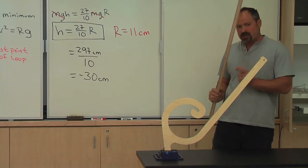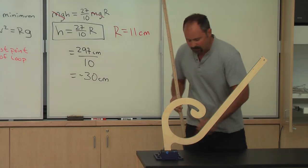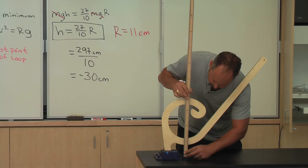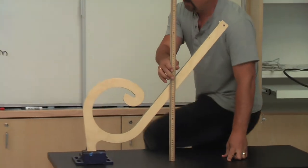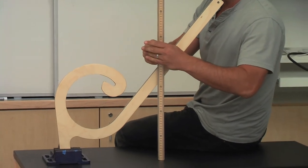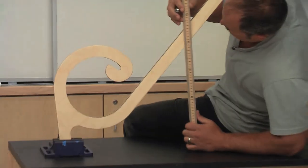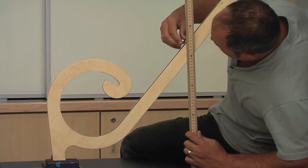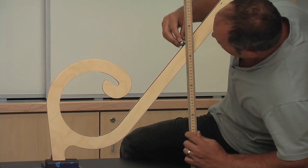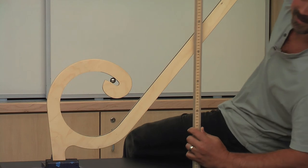So, I need to go 30 centimeters from the bottom of the loop. We measure the bottom of the loop to be 14. So, if I go up to 44, the ball ought to just barely make the loop. So, here's my 44 point, and let's see. Woohoo! Made the loop!